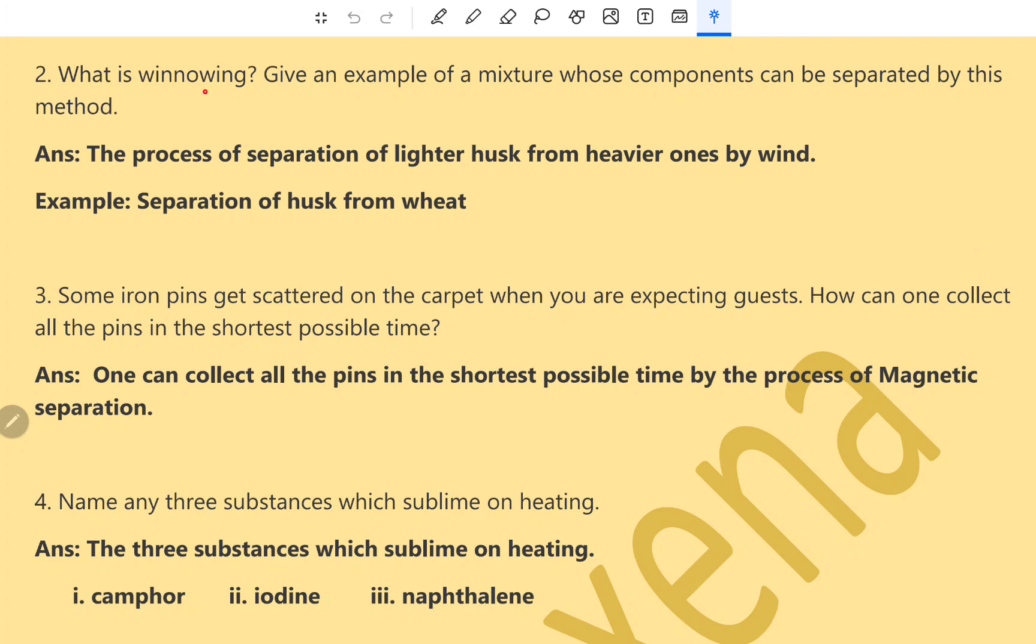What is winnowing? Question number 2. Give an example of a mixture whose components can be separated by this method. The process of separation of lighter husk from heavier ones by wind is called winnowing. Example separation of husk from wheat.